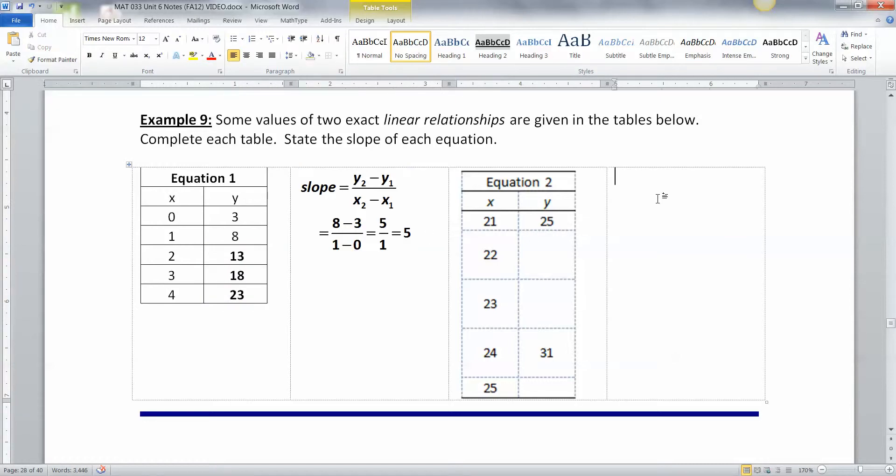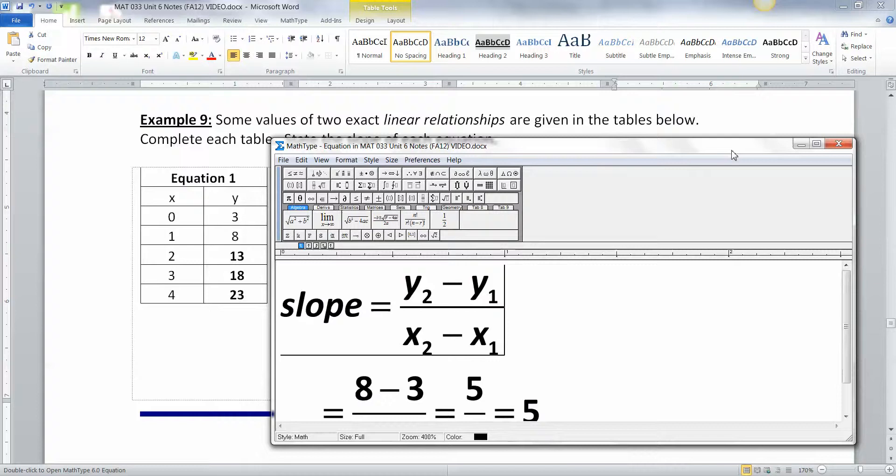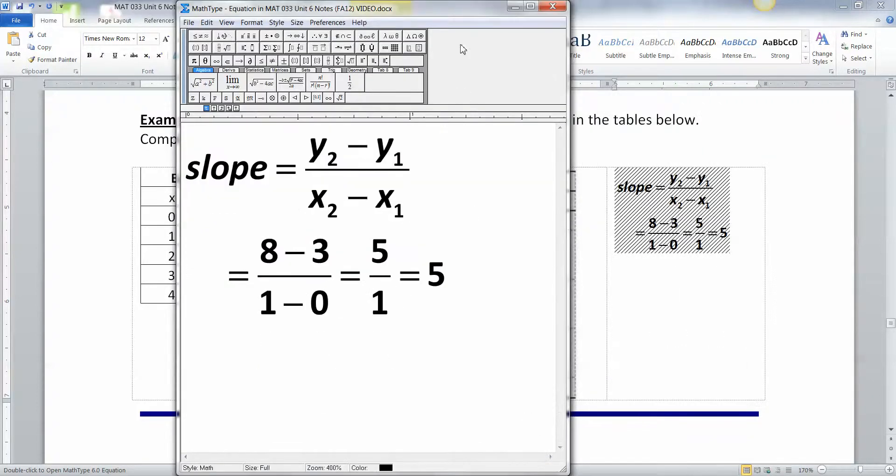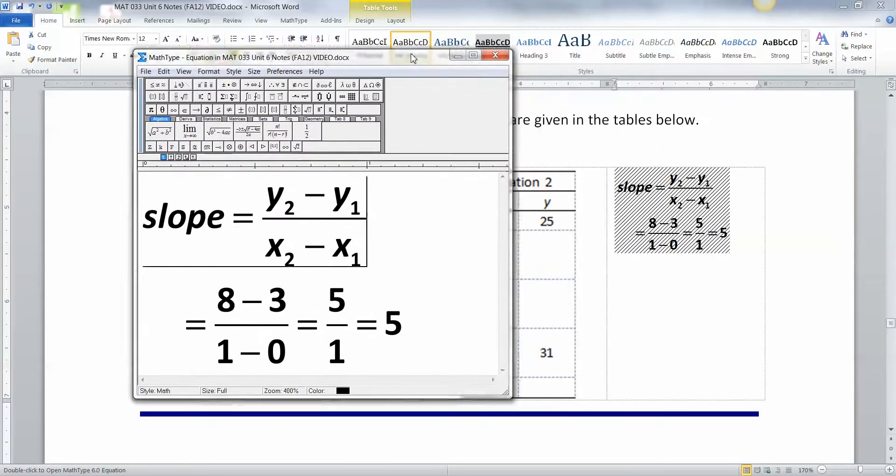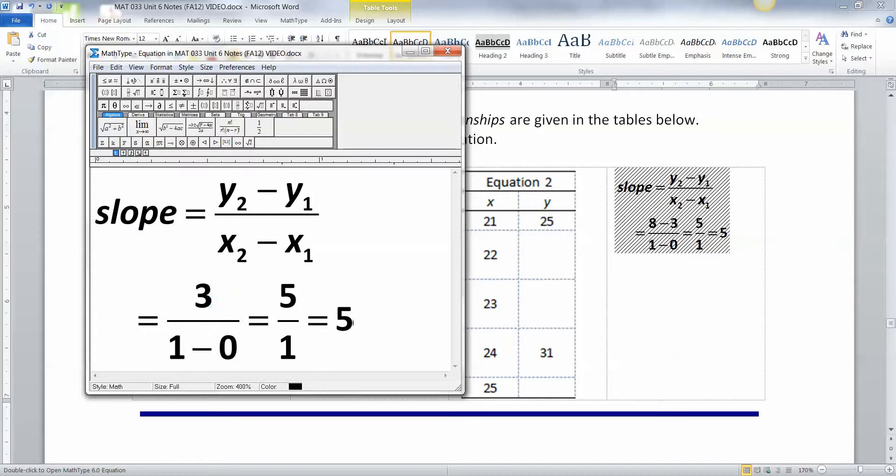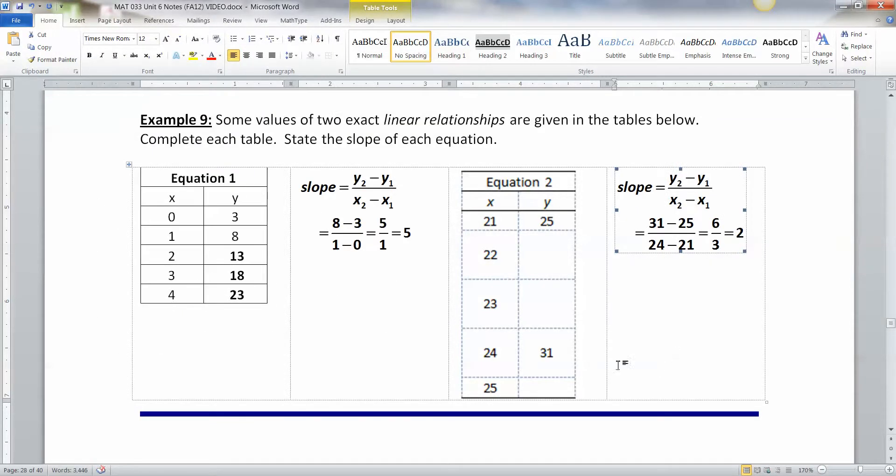All right now we're going to do the same thing over here. This one's going to be a little bit more complicated because they're not right next to each other. Honestly the first one you could have done without really any help at all because you can kind of see that pattern, that it's going up by five and therefore you can fill in the rest. All right but over here we've got a little bit of trouble so we need to take 31 take away 25 over 24 take away 21, right? Because 31 is our y2, 25 is our y1, 24 is the x2 that goes with that and then 21. So that gives us, let's see, 31 take away 25 is 6 and then 24 take away 21 is 3, right? And then that gives you 2. So your slope is 2 and that'll help us fill this out.